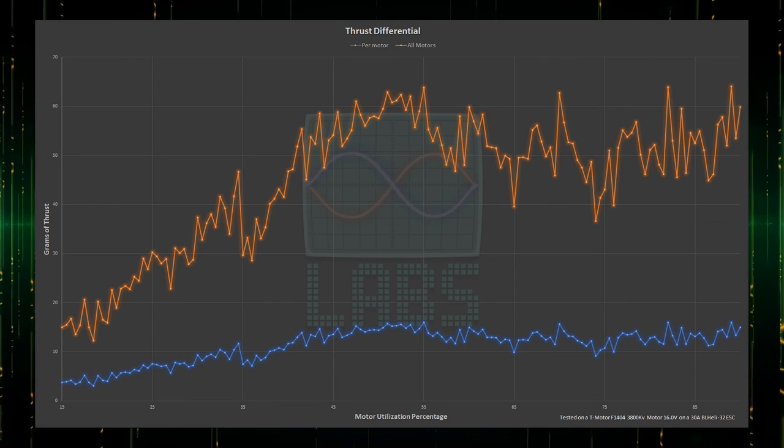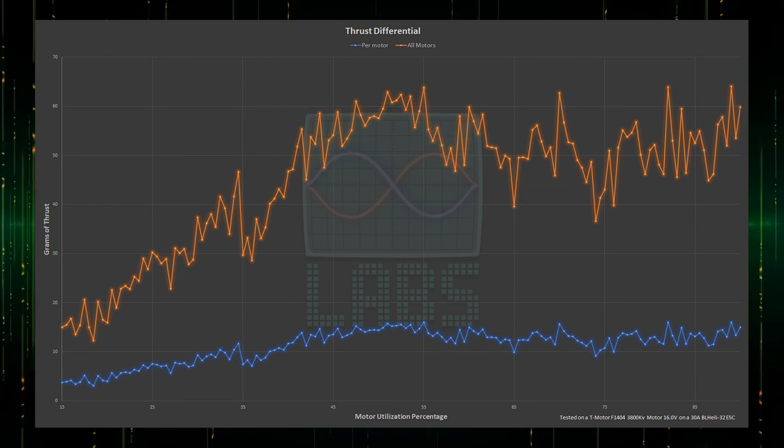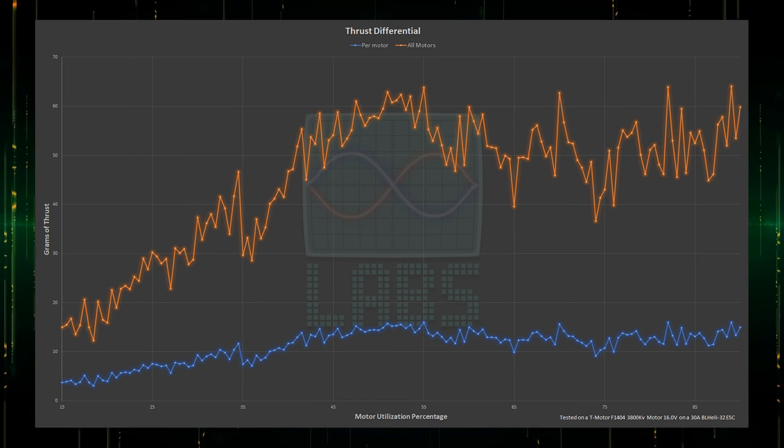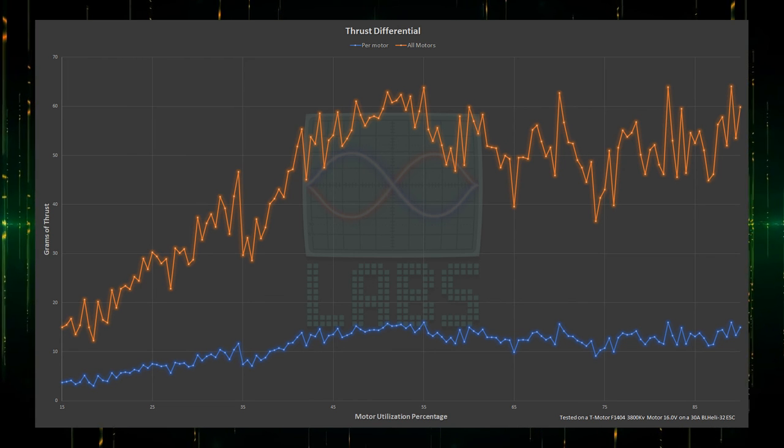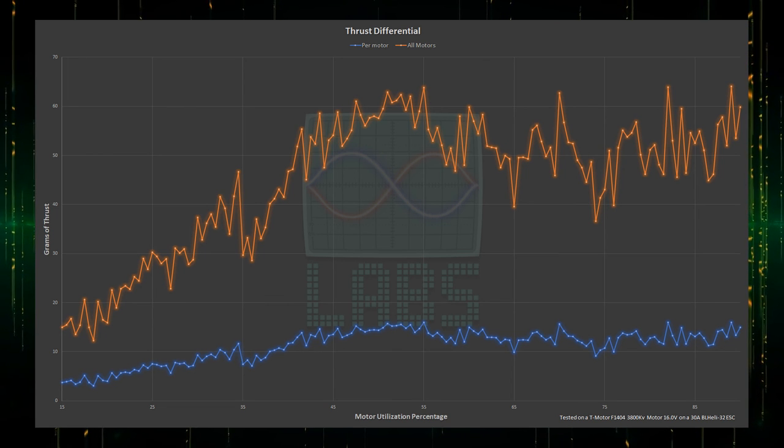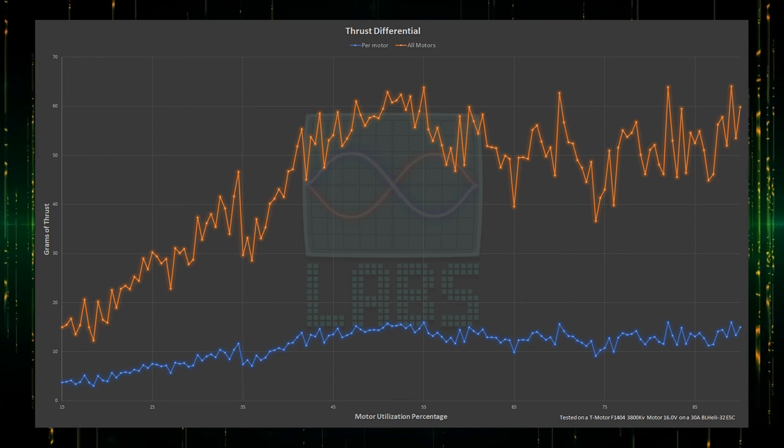How much of a gain? Here you can see the amount of additional thrust the propeller created across the throttle range, with the blue showing just one propeller, and the orange showing all four. After 35%, we're seeing between 40 and 60 grams of additional thrust for the entire aircraft, which isn't insignificant on a light aircraft.